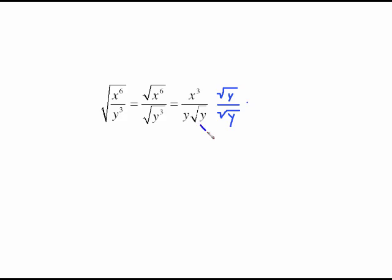The bottom square root of y times the square root of y is just y. That y times the y that's already sitting there is going to give us a y squared on the bottom. The top is just x cubed times that radical. This is entirely simplified. No more radical on the bottom, no simplifying, we're finished.